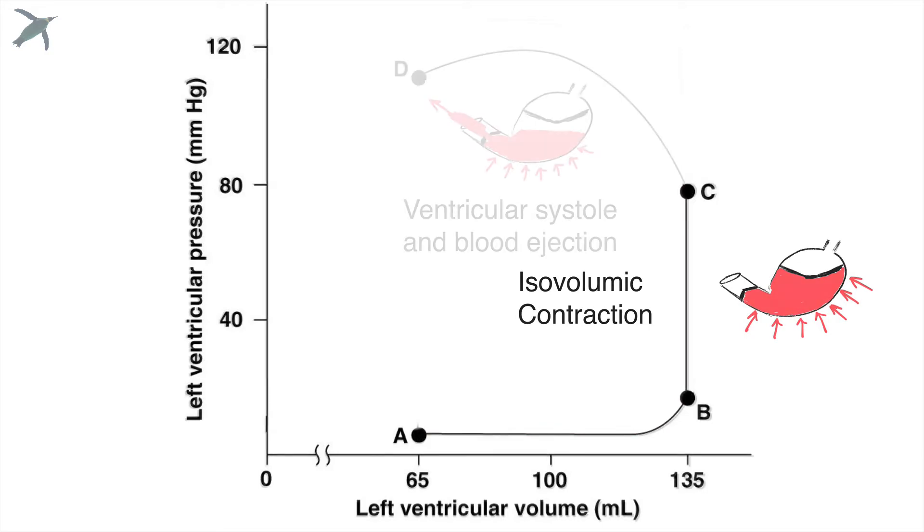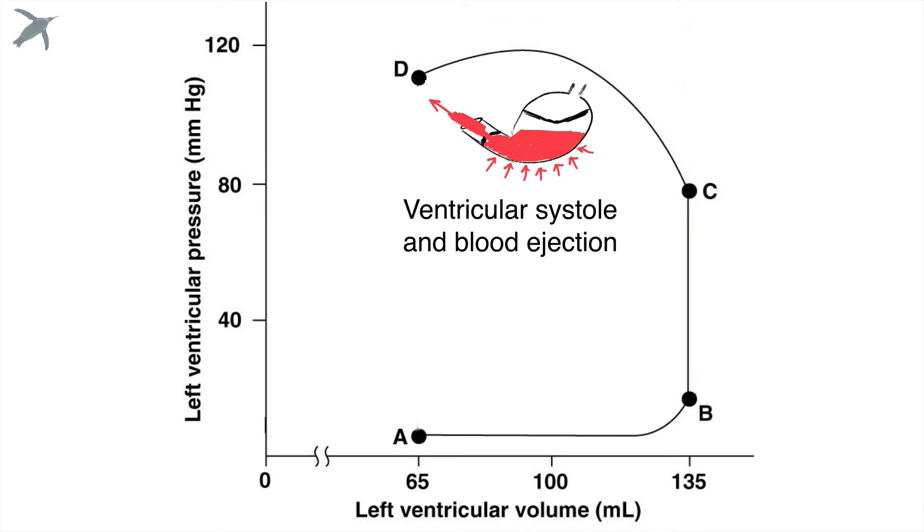At letter C, the aortic valve opens, and we continue to squeeze. This is the blood ejection. So you notice the pressure continues to go up because it's still squeezing, but the volume on the X is going down because the blood is leaving the ventricle via the aorta.